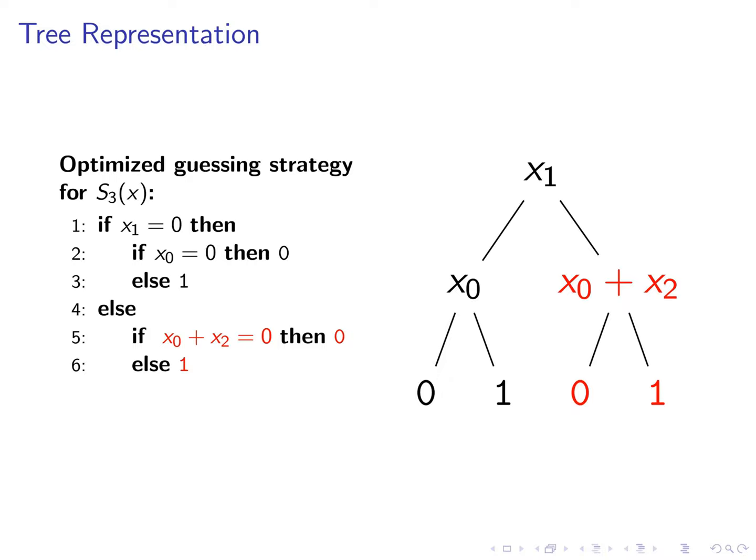Note that the tree would have more leaves had we first guessed x0 and then x2. In our paper we show that the number of leaves often corresponds to the attack complexity. So we usually look for trees with the minimal number of leaves. Also note that we are not restricted to boolean output values. The outputs can also be binary vectors.